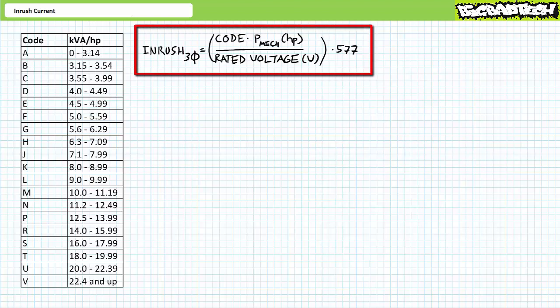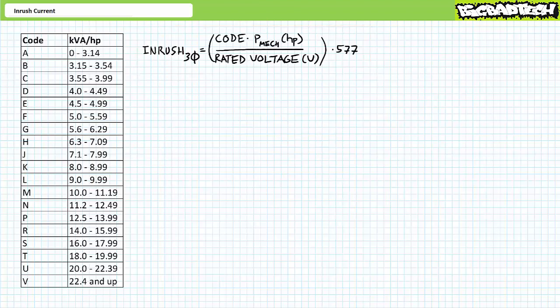The formula for a three-phase AC motor demonstrates that inrush equals the code number times the power in units of horsepower divided by the rated voltage times 0.577. Note the placement of the parentheses for those who wish to enter this formula into a calculator in one pass. As illustrated in the table, each letter has a lower and upper numerical bound. Depending upon the application, you may wish to perform the calculation twice — potentially three times — to determine the minimum, maximum, and average anticipated inrush.